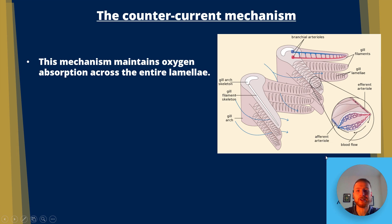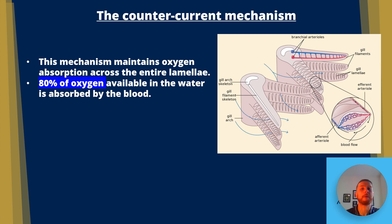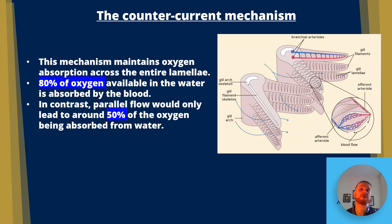Now let's summarize this. So the mechanism maintains oxygen absorption across the entire lamellae. 80% of oxygen available in the water is absorbed by the blood. In contrast, parallel flow would only lead to around 50% of the oxygen being absorbed from the water.